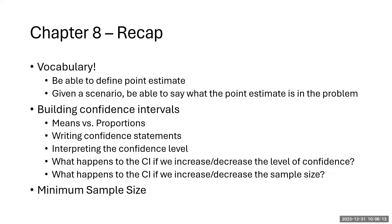As a recap: lots of vocabulary — make sure you can define a point estimate as a single number estimate for a population parameter, taking the form of a sample proportion or sample mean. We built confidence intervals, wrote confidence statements, interpreted confidence levels, discussed the impact of changing the level of confidence and the sample size on confidence interval width, and worked minimum sample size examples. Raising the sample size decreases the width of the interval. That concludes Chapter 8.